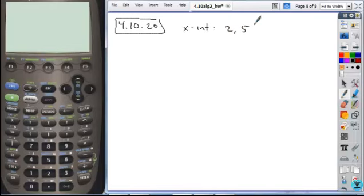So it tells you that the intercepts, x-intercepts are 2 and 5, and a given point is the point 4, negative 2. Okay, so here because they give you x-intercepts, now you want to use the intercept form.